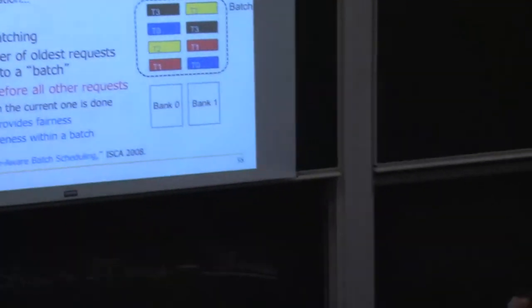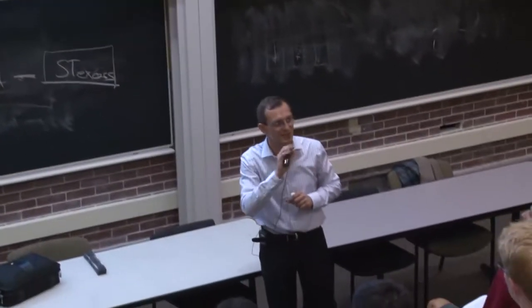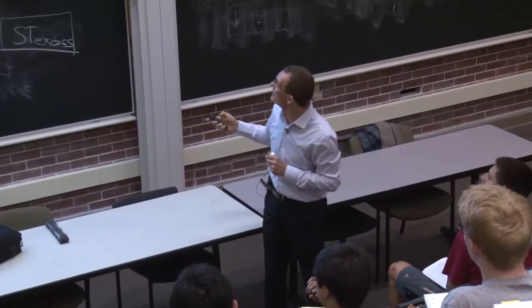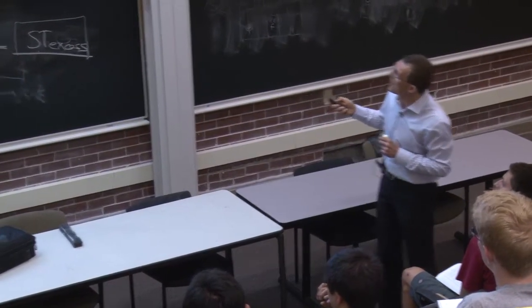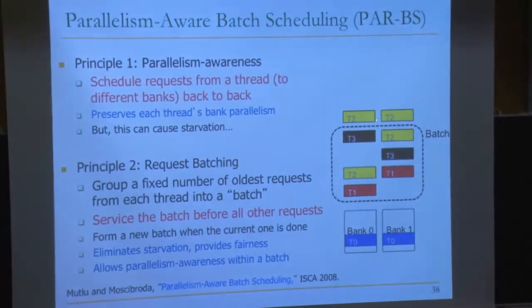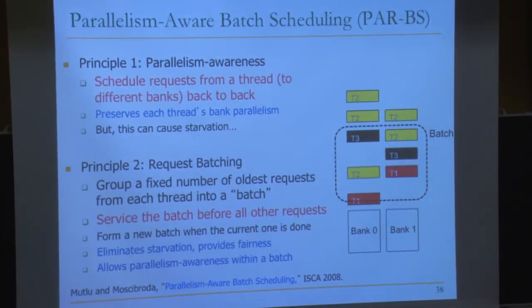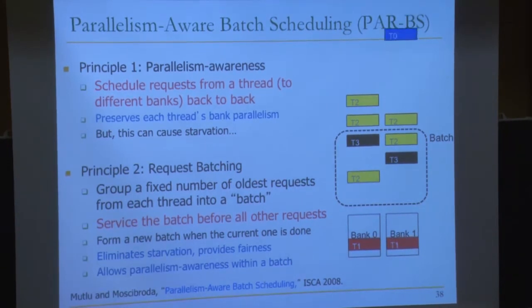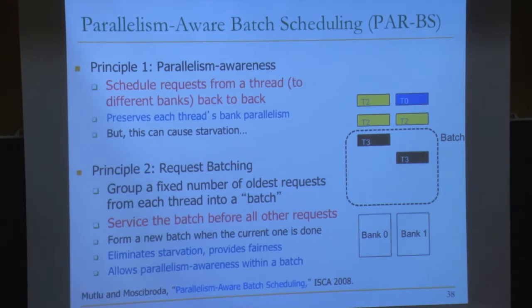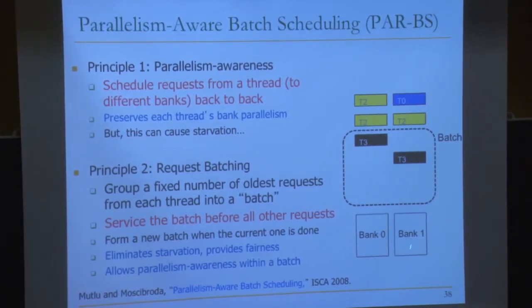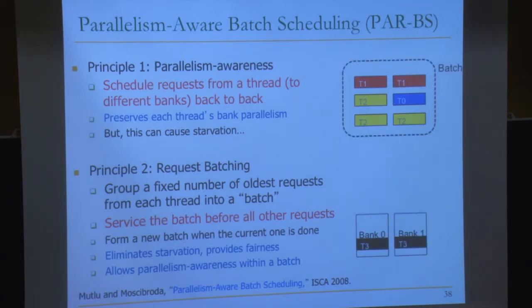Within the batch, the scheduler first services thread 0's requests in parallel, then thread 1's in parallel, then thread 2's, and so on. New requests that arrive but weren't in the batch are not included — otherwise we'd have starvation. After all marked requests are serviced, a new batch is formed. This gives a very regular scheduler.